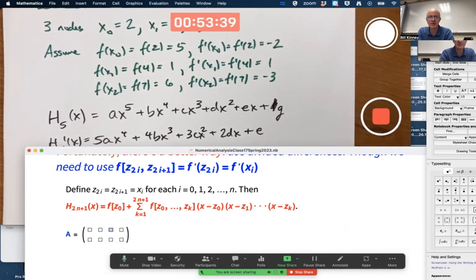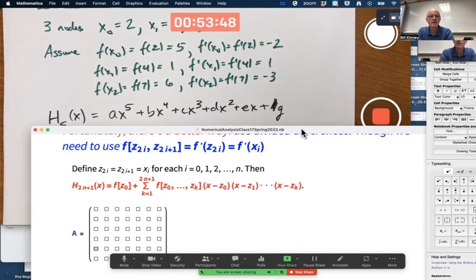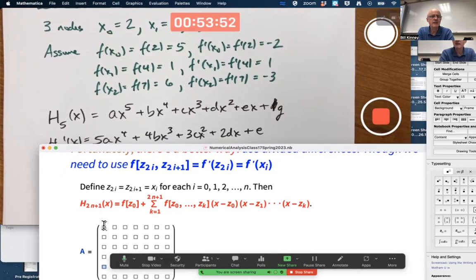Control comma adds columns. There's three, four, five, six, seven columns. Control return adds rows. I've got two rows now. Three, four, five, six rows.